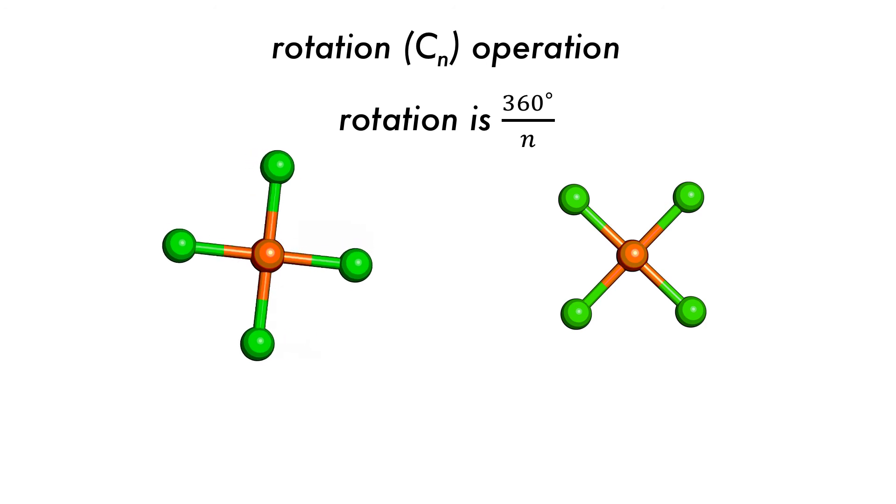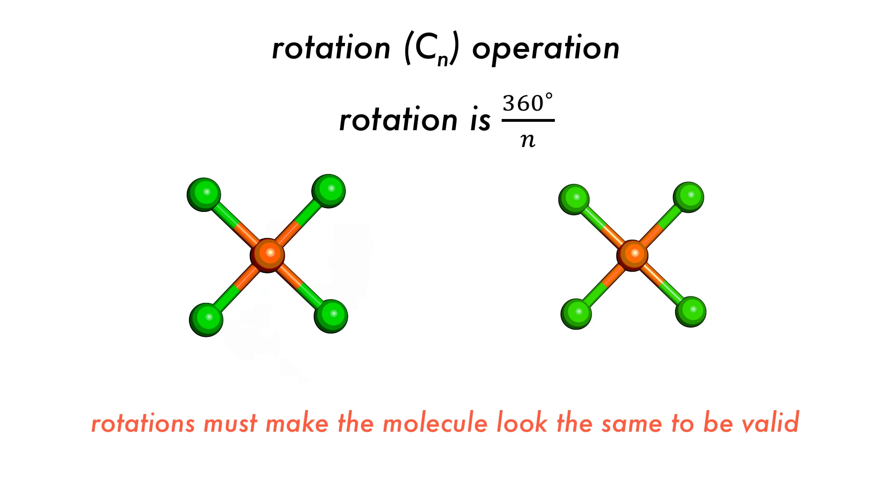For this square planar molecule, we have a C4 axis of rotation, as 4 rotations of 90 degrees are required to return the molecule to the original state, whilst also leaving the molecule seemingly unchanged.